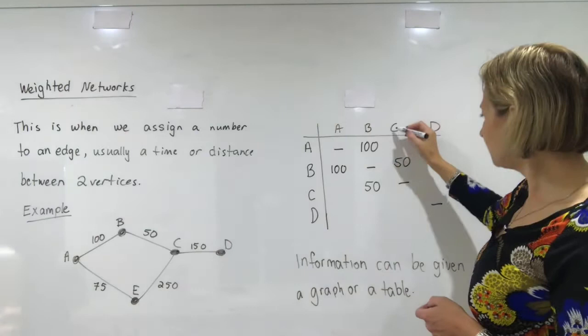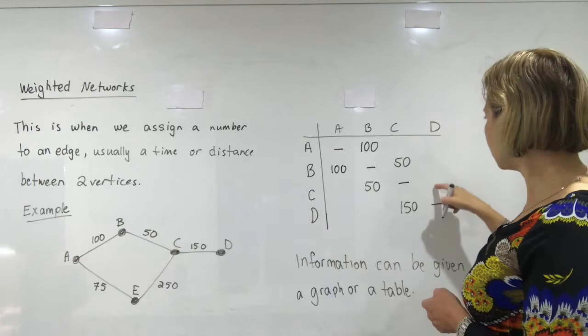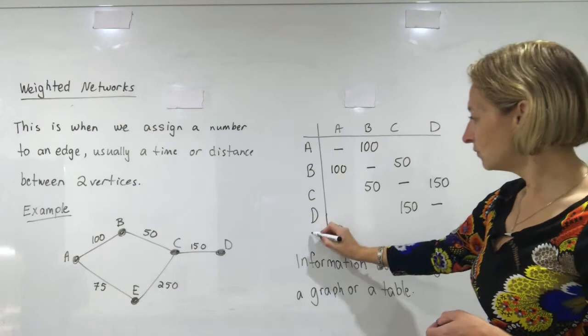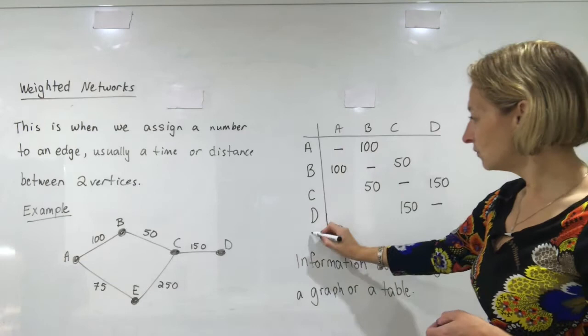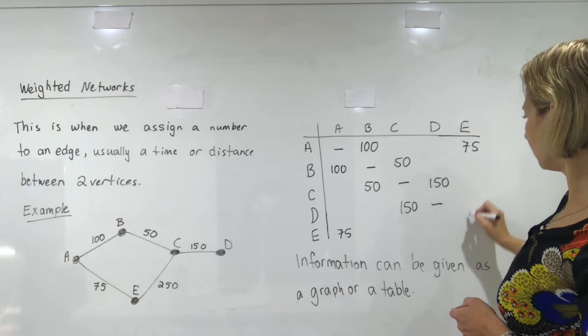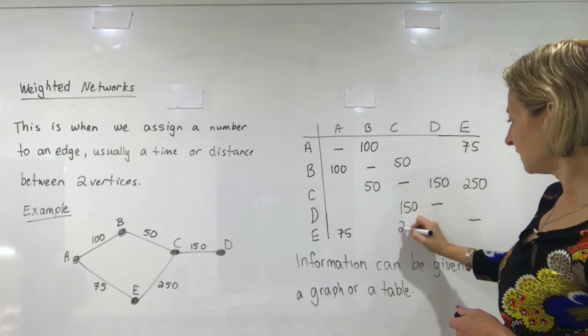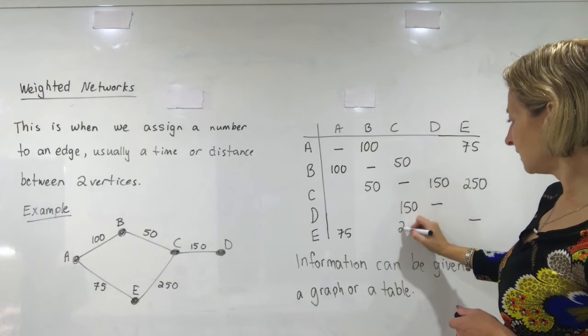C to D is 150 or I could do CD is 150 and I've got to do A to E is 75. A to E, I need an E on my table. A to E is 75 and of course E to A would be 75, E to E would be a gap and E to C is 250. E to C and C to E is 250. And the rest of them don't have any roots connecting them so they would all be gaps.